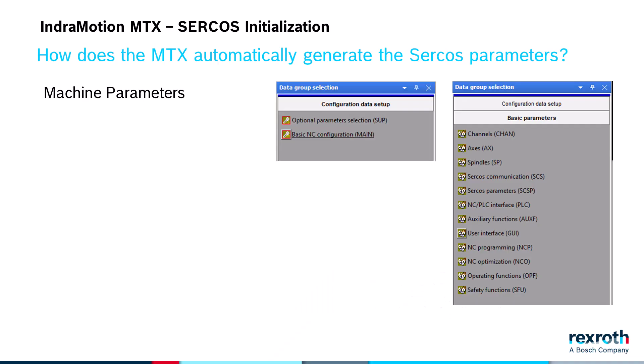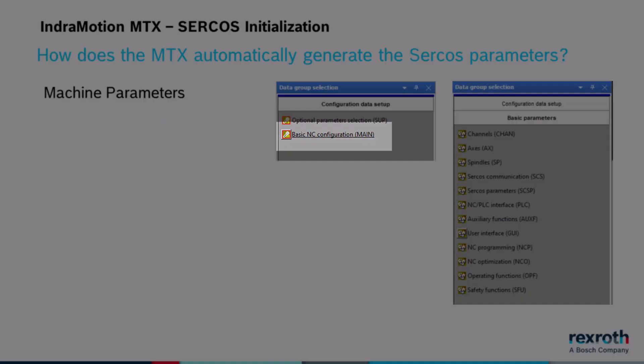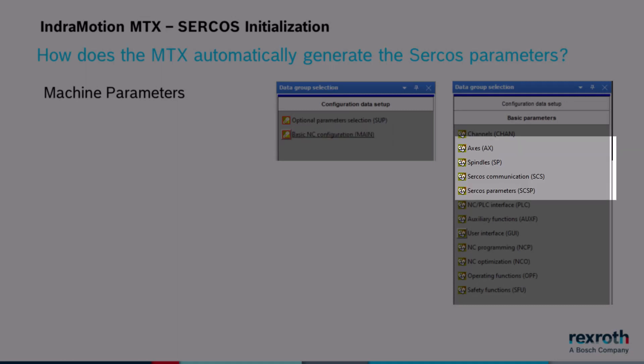The MTX uses its machine parameters to generate the CIRCOS parameters. Specifically, it uses these parameter groups: basic NC configuration, axes, spindles, CIRCOS communication, and CIRCOS parameters.